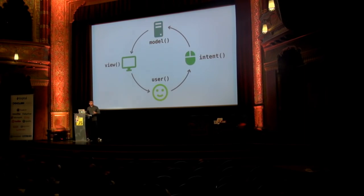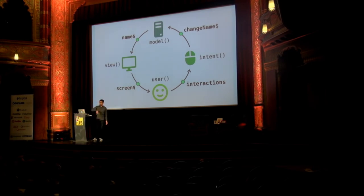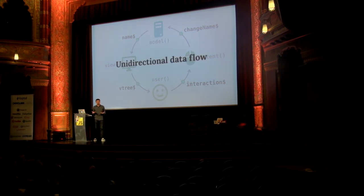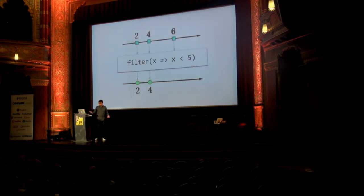So what have we made? Model, view, user, and intent are functions, and between each is an event stream. Name stream is the output of the model and input of the view; screen stream is the output of the view and input of the user, and so forth. This is unidirectional data flow. And this was functional programming and immutable techniques. And these food sticks were reactive programming.